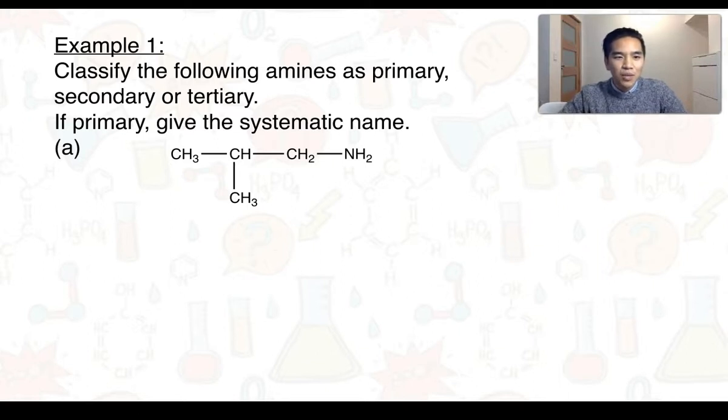So example 1, we want to classify the following amines as primary, secondary, or tertiary. And if primary, we need to give the systematic name. So let's start off by identifying our amino group here. And we can see that this nitrogen is bonded to just one carbon atom, so this makes it a primary amine.